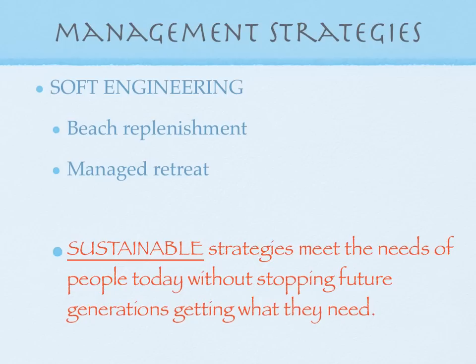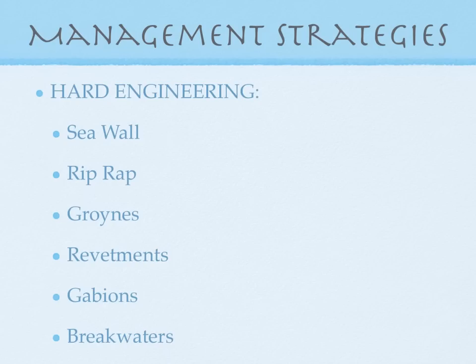These soft engineering methods are a lot more sustainable, which means the strategies meet the needs of people today without stopping future generations getting what they need. Moving back to hard engineering: the seawall at Bridlington is a wall made out of hard material like concrete that reflects waves back to sea. It prevents erosion and acts as a barrier to prevent flooding. However, it creates strong backwash which erodes under the wall, meaning the wall has to be maintained every few years — it's very expensive.